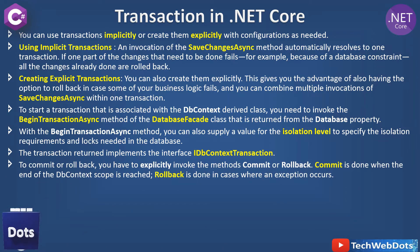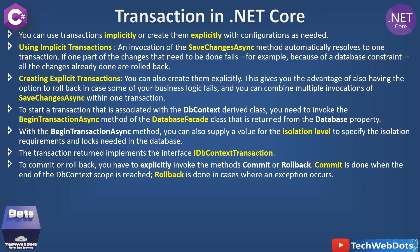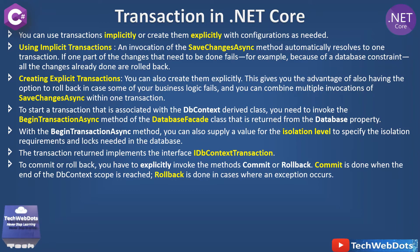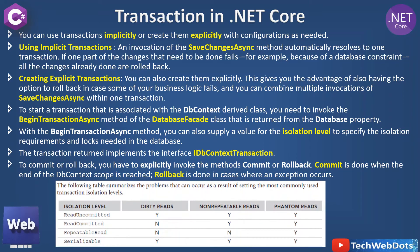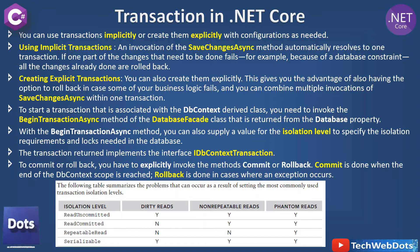Now it's time for practical implementation, but before that one more point: to commit or rollback you have to explicitly invoke the Commit or Rollback methods. Commit is done when the end of the DbContext scope is reached, and Rollback is done in case an exception occurs.